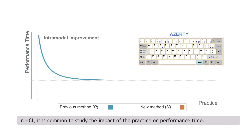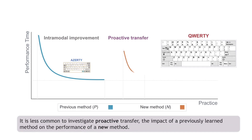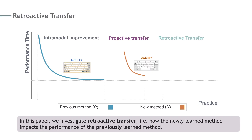In HCI, it is common to study the impact of practice on performance time. It is less common to investigate proactive transfer — the impact of a previously learned method on the performance of a new method.